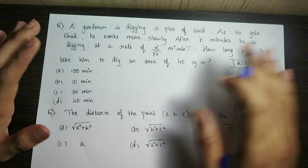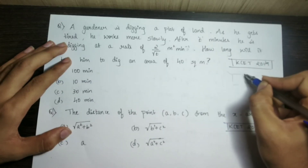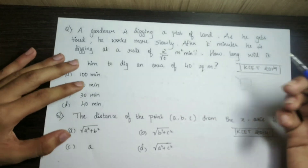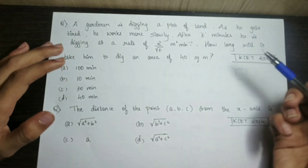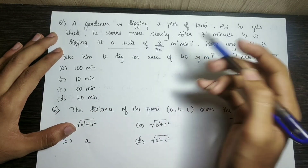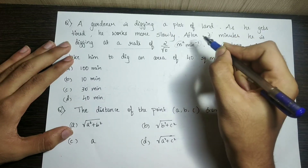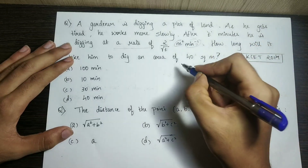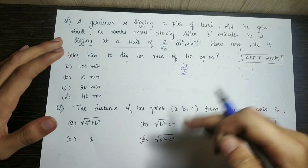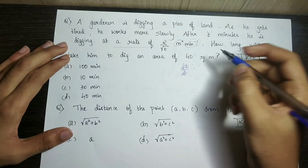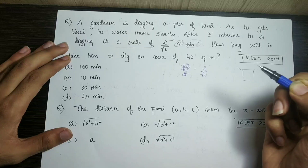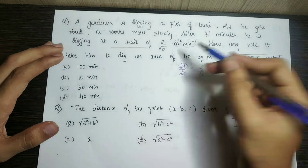The rate of digging is given as 2 by root t square meters per minute — that is, area per minute. So dA/dt, the rate of change of area with time, is equal to 2 divided by root t. We need to find time when the total area A equals 40.